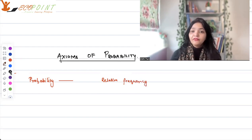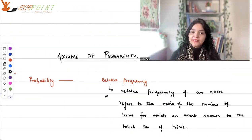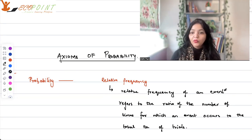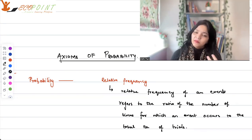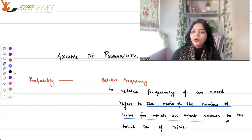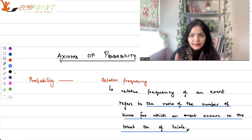What is the concept of relative frequency? Relative frequency with respect to probability is basically the relative frequency of an event. What is relative frequency of an event? It basically refers to the ratio of the number of times an event occurs to the total number of trials in any experiment.